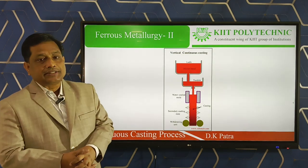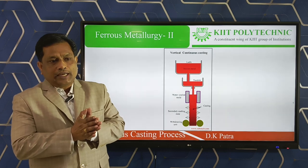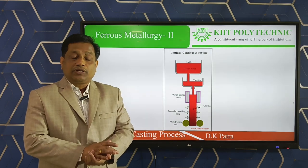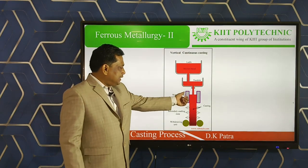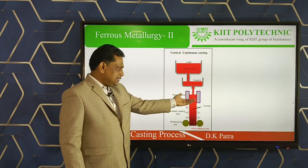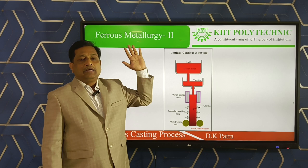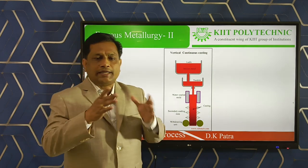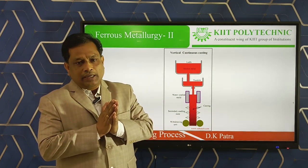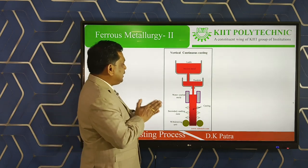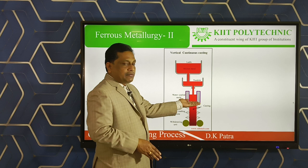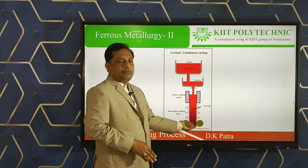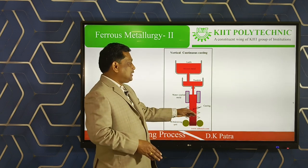In the vertical continuous casting machine, the ingot is cast into a long bar using a single mold box. The mold box has open top and bottom — only four side walls are provided. Steel is poured from the top and a false bottom, called a plug, is placed below. When the plug is withdrawn, the bar comes out from the mold box.